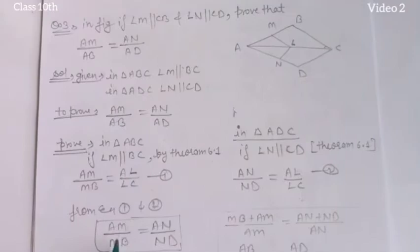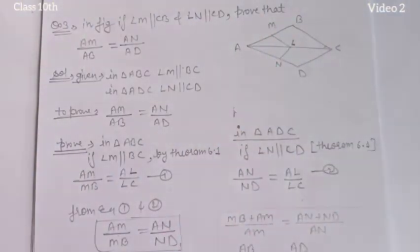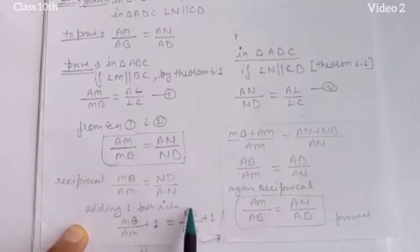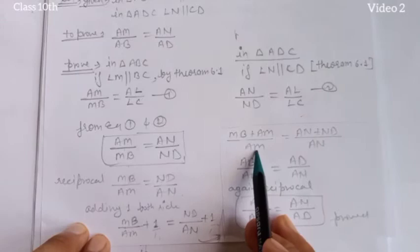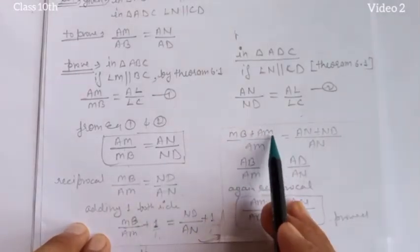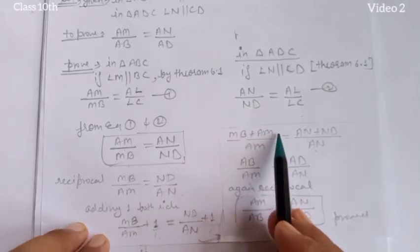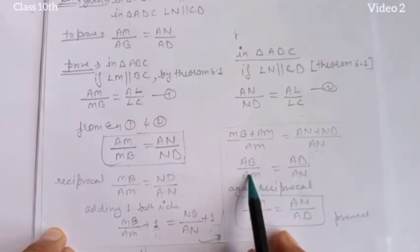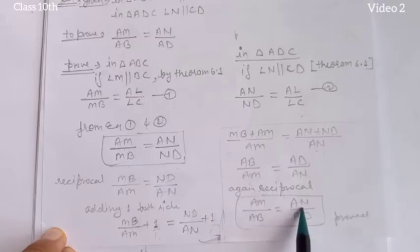Now we need AM upon AB, but we have MB. Taking the reciprocal gives MB upon AM equals ND upon AN. Adding 1 to both sides: MB/AM + 1 = ND/AN + 1. Taking LCM: (MB + AM)/AM = (ND + AN)/AN. Since MB + AM equals AB and AN + ND equals AD, we get AB upon AM equals AD upon AN. Taking the reciprocal again gives AM upon AB equals AN upon AD. Hence proved.